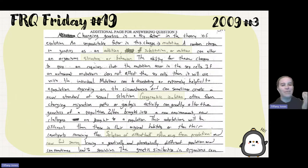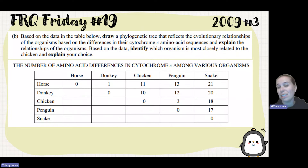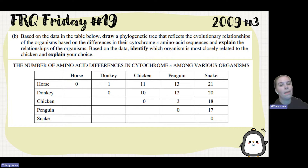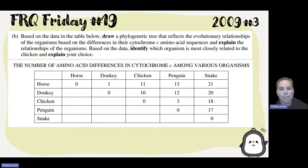The second part tells us to draw a phylogenetic tree that reflects the evolutionary relationships of organisms based on differences in the cytochrome C amino acid sequences, and to explain the relationships of the organisms. Based on that data, we're going to identify a couple things. On the exam, they will give you this data — these are amino acid differences in cytochrome C.